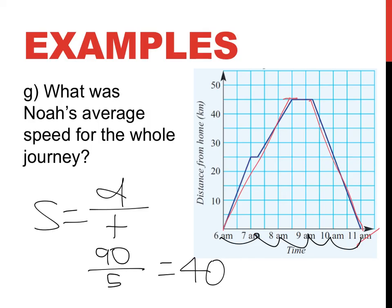Sorry, where did I get 40 from? 90 divided by 5 is 18 kilometers per hour. And that's it, guys. That's distance-time graphs.